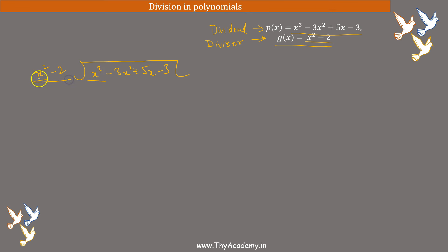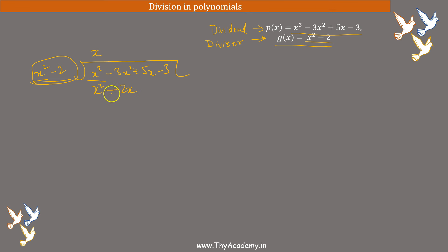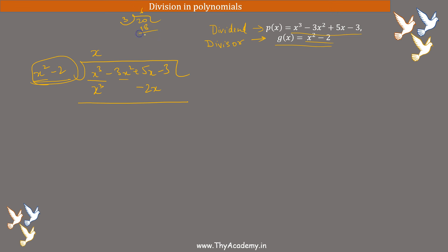So how do we divide? We look at the highest power of the divisor and dividend. The divisor's highest power is x², and the dividend's maximum power of x is 3 — which is x³. So we focus on x³ and x². We need to make x² become x³, so we multiply by x. So x goes up in the quotient. Now we multiply the whole expression by x: x² gives x³, and -2 into x gives -2x. We put -2x below the x term, because we need to subtract it.